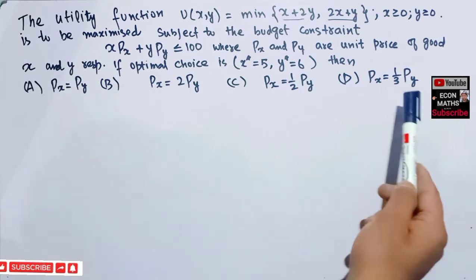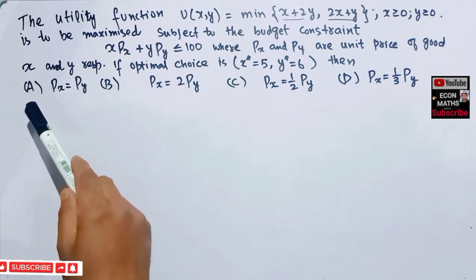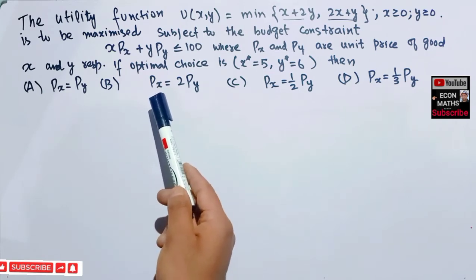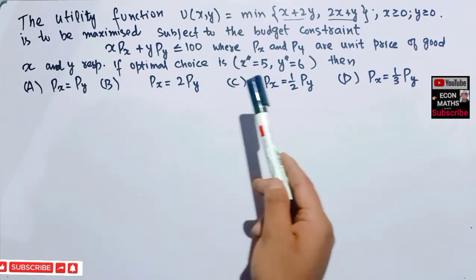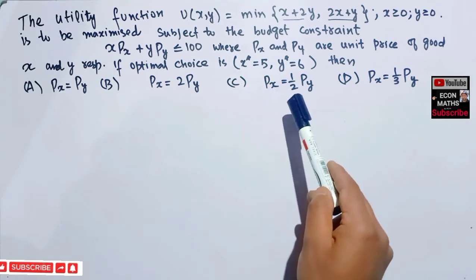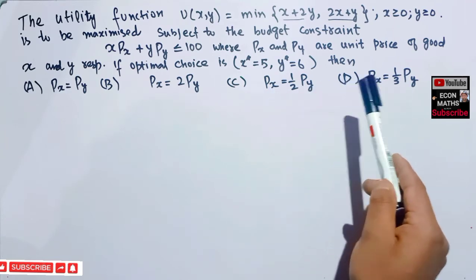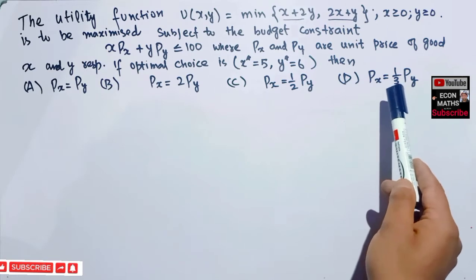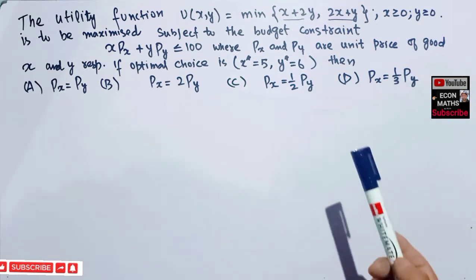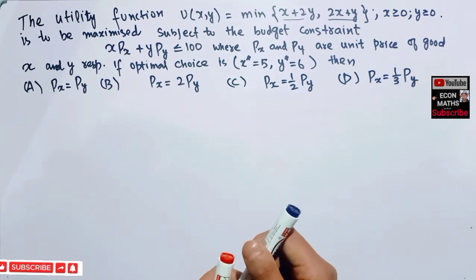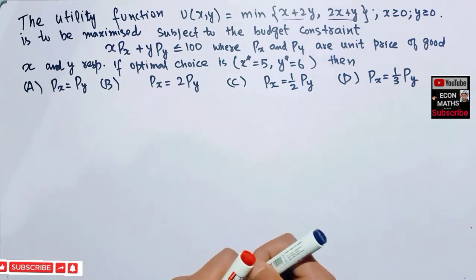We have to select the correct option: (a) px = py, (b) px = 2·py, (c) px = (1/2)·py, or (d) px = (1/3)·py. We will see which is the correct option in this case.